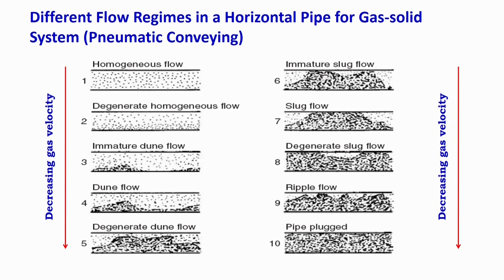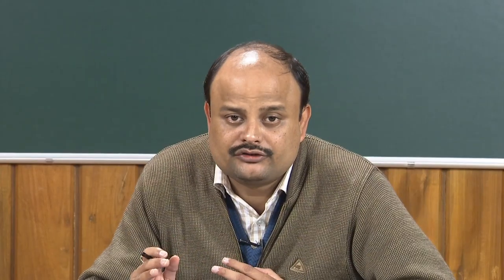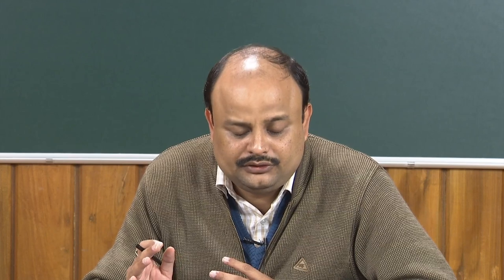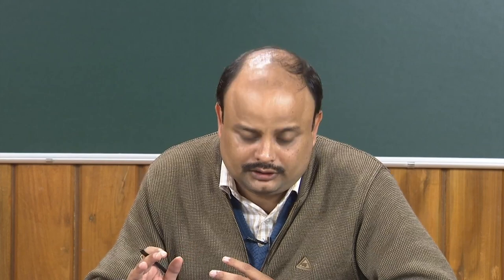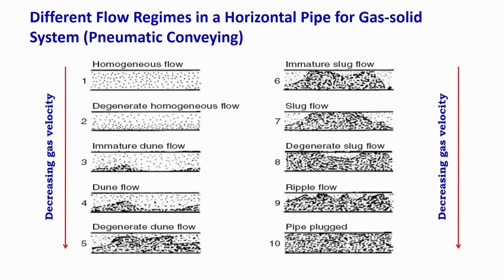Moving forward to pneumatic conveying — gas-solid transportation — which is of major interest in industry compared to hydraulic conveying. In pneumatic conveying, there are more regimes than in liquid-solid systems. Moving from top to bottom either means decreasing velocity or increasing solid loading. At very high gas velocity you get homogeneous flow — the solid is suspended uniformly across the whole pipeline, giving smooth transportation of the solid, called the homogeneous bed.